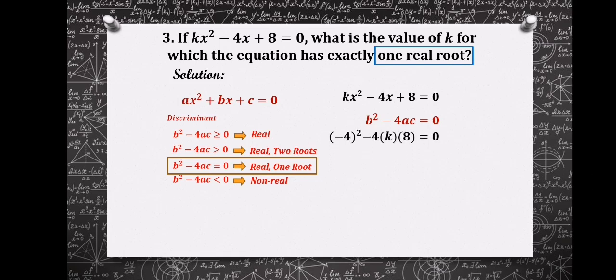The value of b in the equation is -4, the value of a is k, and the value of c is 8.